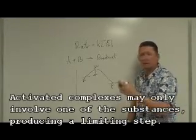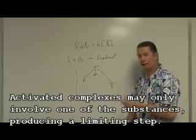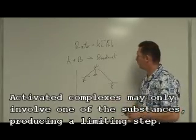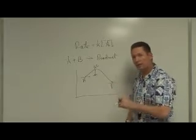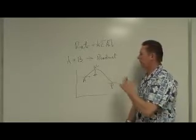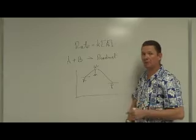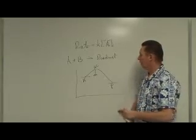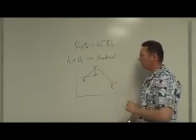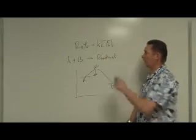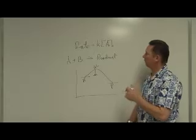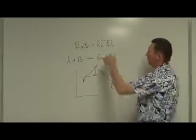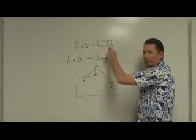Some point where other atoms had to join to it and then they spontaneously fell apart. That activated complex may only involve one of the substances. The other substances may be things like catalysts or inhibitors affecting that reaction. In this instance, only the A was involved in the limiting step, so we only included it. All that has to be determined experimentally.